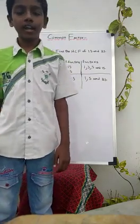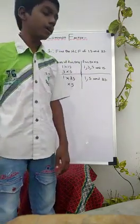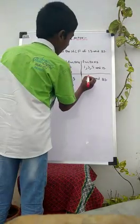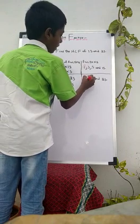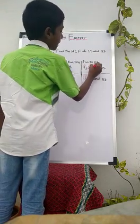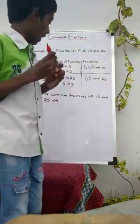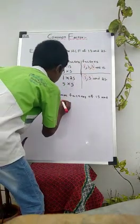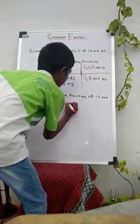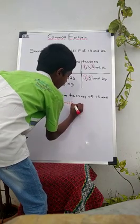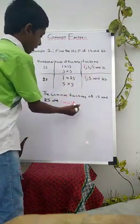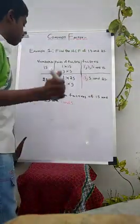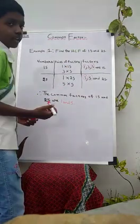Step 2: Identify the common factors of the given numbers. Here you can see that 1 is common and 5 is common. So the common factors of 15 and 25 are 1 and 5. Step 3: Find out the largest common factor of the given numbers. Therefore, the highest common factor is 5.